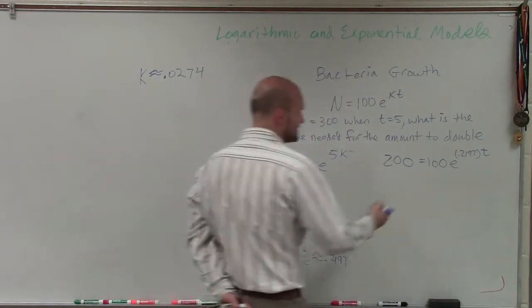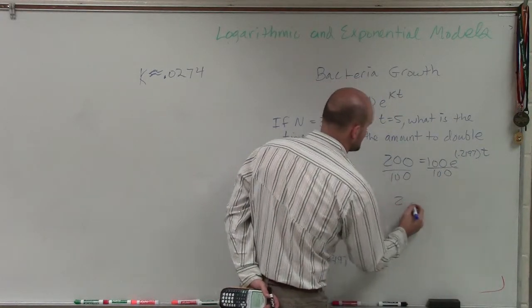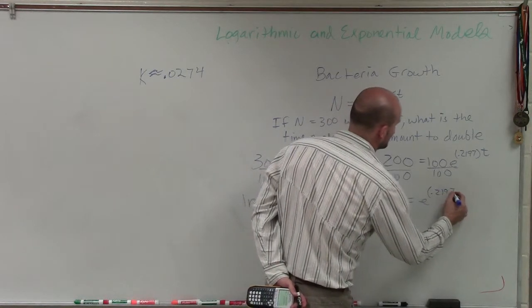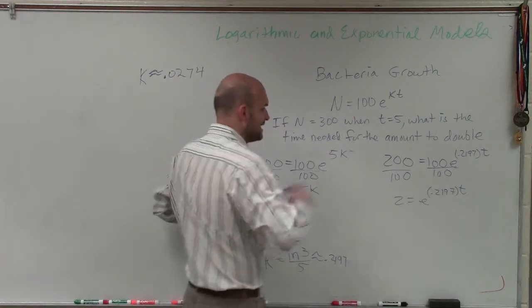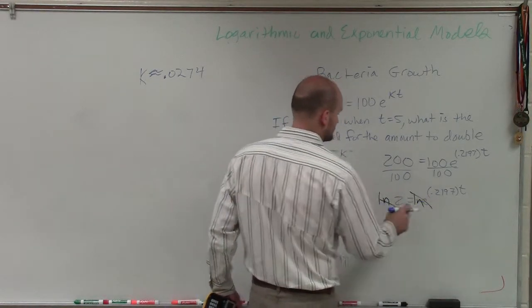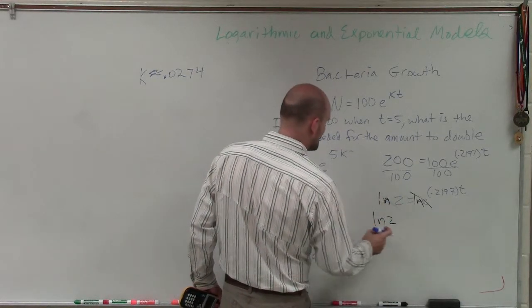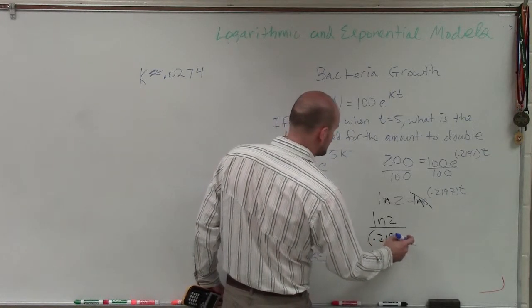All right? So to solve for this, again, we can just divide by 100. So I have 2 equals e to the 0.2197 times t. Then, again, ladies and gentlemen, what we'll do is we'll take the ln on both sides again. So therefore, I have the ln of 2 divided by my growth rate. So 0.2197.